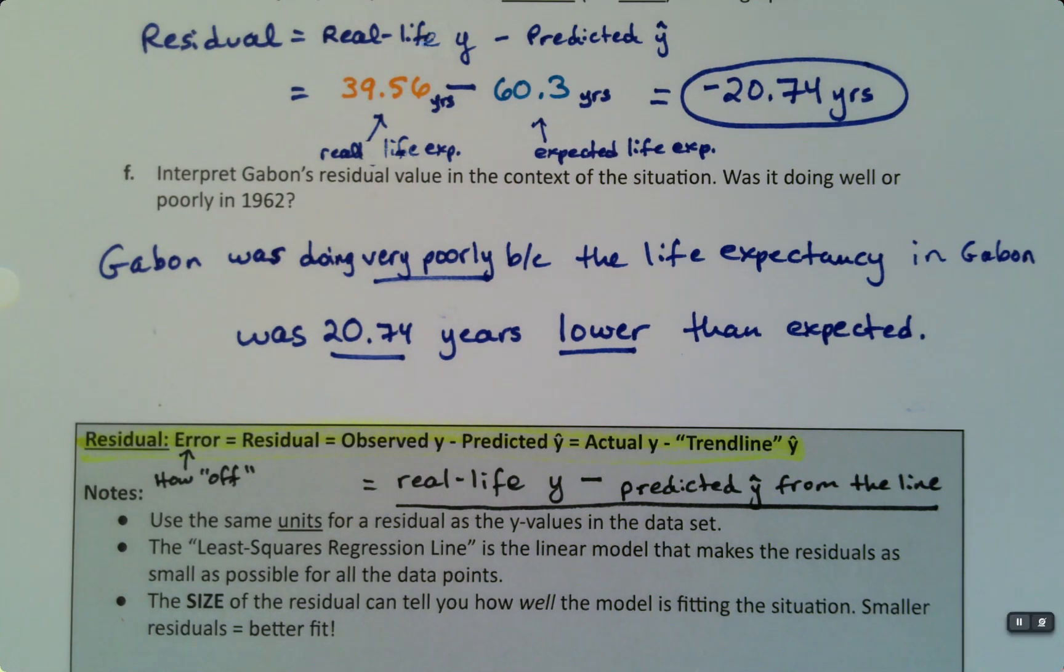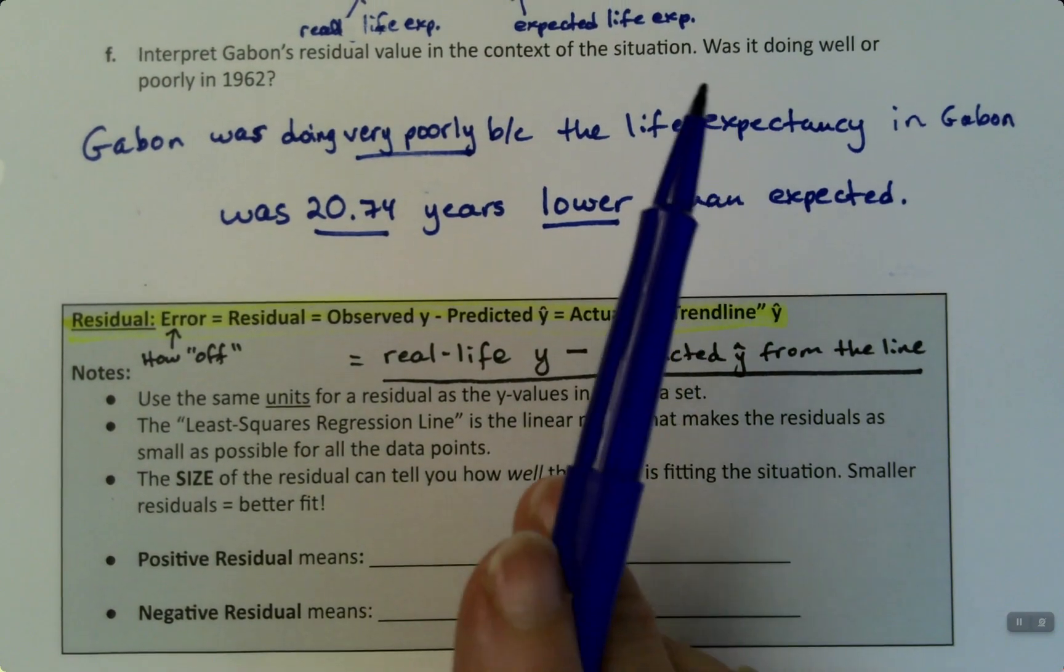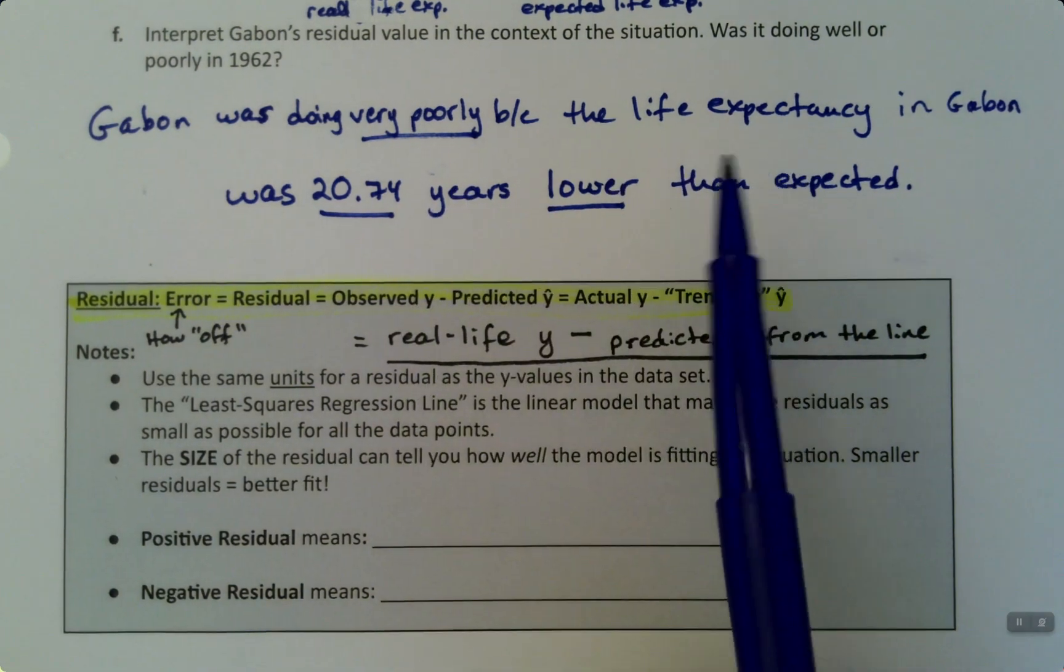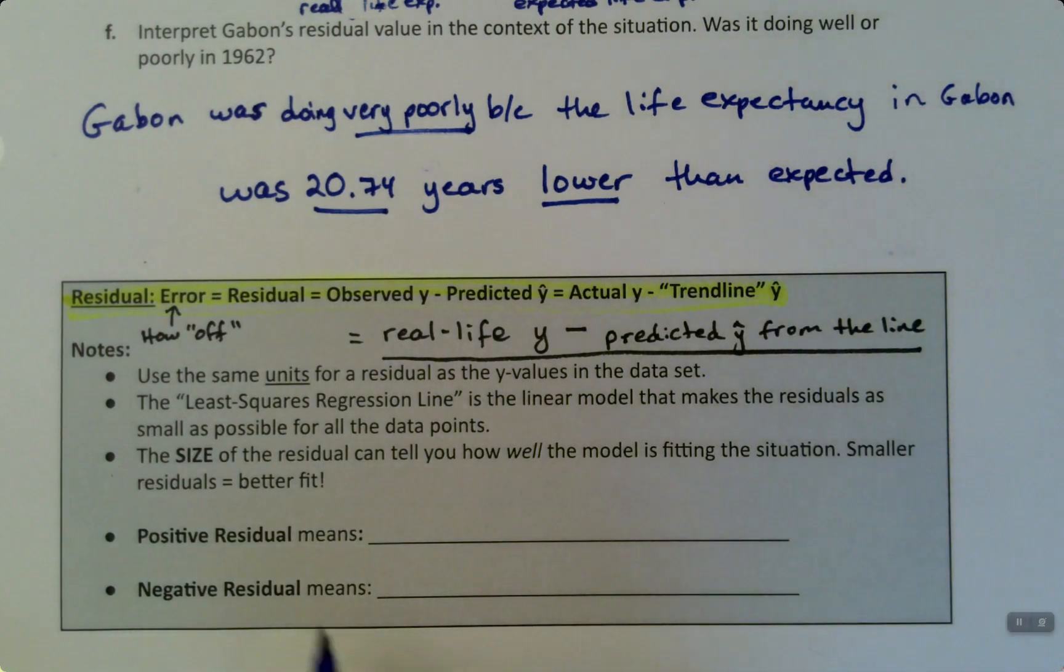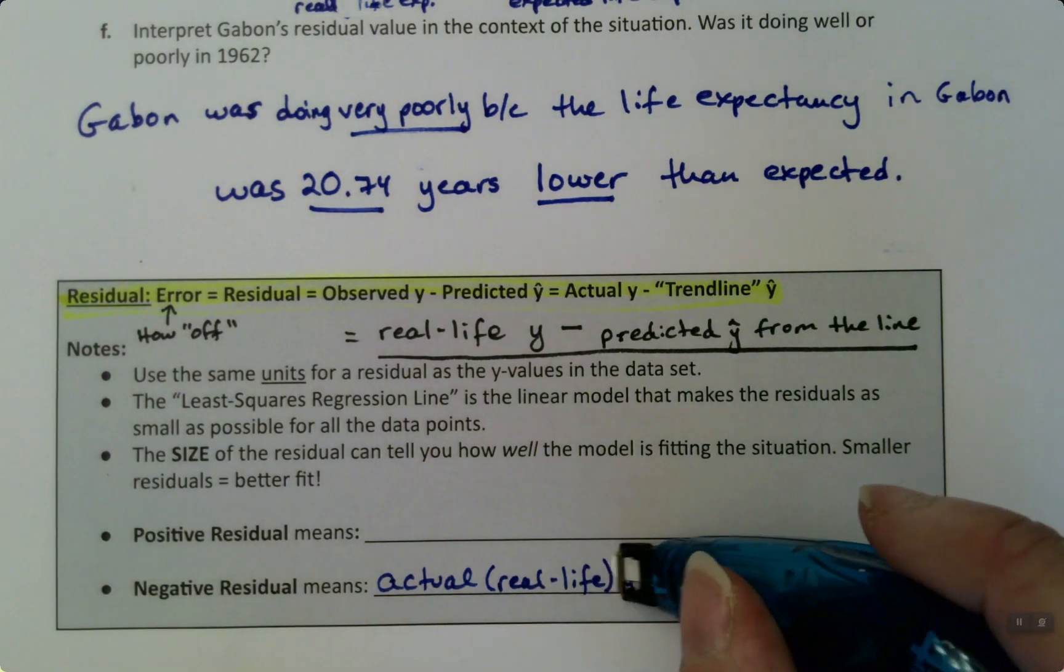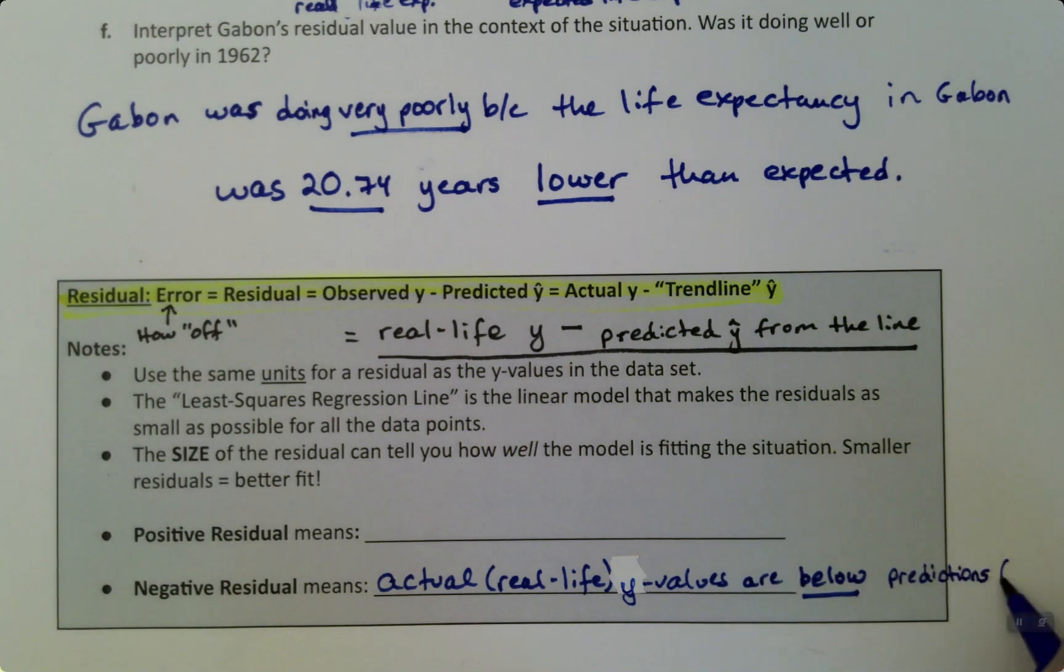So now let's think about what residuals mean to us overall. What are we learning from this? The residual tells us how far off our values were. So we saw in this case, for example, we have a negative residual. Now, keep in mind, negative does not always mean a bad thing. This one ended up being a bad thing because this was about life expectancy. Sometimes being negative is a good thing. So a negative residual we saw up above means the actual values, real life values, y values are below the line. Below predictions, which is where the line is. The line is your prediction.